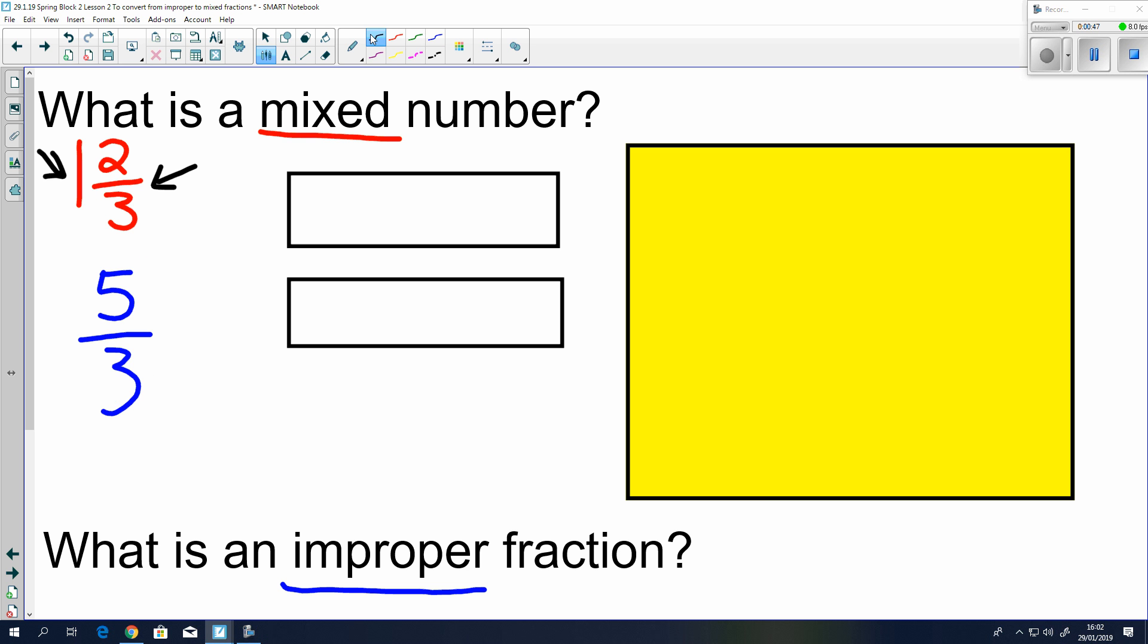And I'm going to show you what that's like on this bar model here. So, if I've got bars divided into 3 equal parts, and I want to colour in 1 and 2 thirds, that would mean 1 whole bar. That's 1 whole bar. And then 2 out of 3 pieces. So, 5 thirds. That's 1 bar and 2 thirds here. Or, I have 1, 2, 3, 4, 5 pieces of 3. Because they're all in thirds, essentially. So, 5 thirds, it's the same thing.